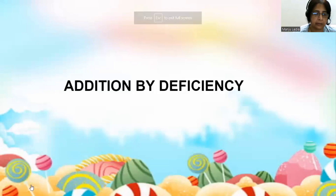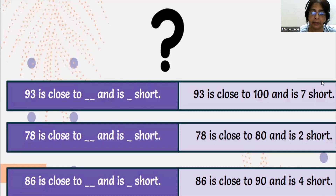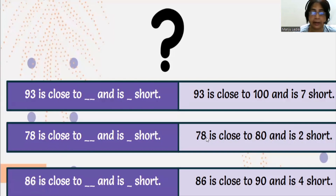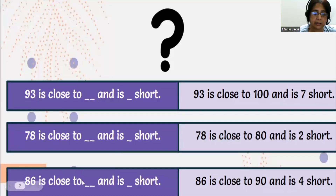Addition by deficiency method. Let's see what it is. 93 is close to which number? 93 is close to 100. So how much short? 7 is short — 100 minus 93 is 7. 78 is close to which number? 78 is close to 80. How much short? 80 minus 78 is 2. Now 86 is close to which number? 86 is close to 90. How much short? 4 is short. Got it.